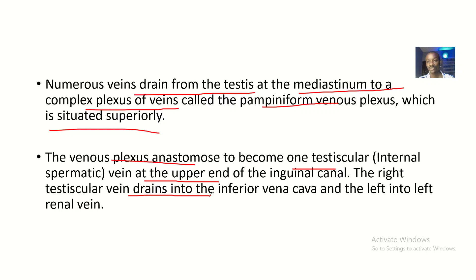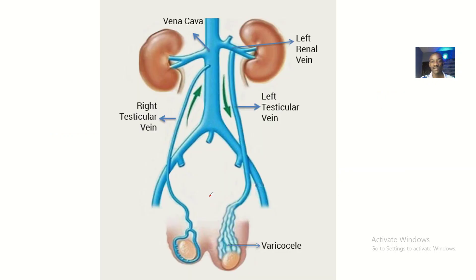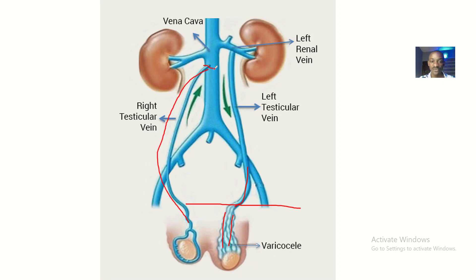The right testicular vein drains into the inferior vena cava, while the left testicular vein drains into the left renal vein. You can see many veins coming together to form one vein at the inguinal line. The right side drains directly into the inferior vena cava, and the left side drains into the left renal vein.